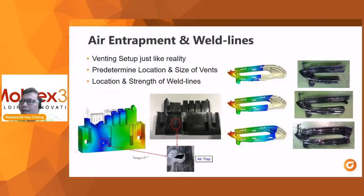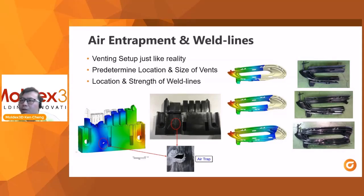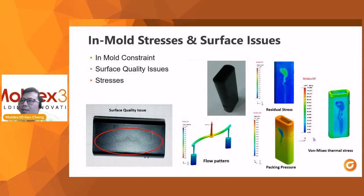This example shows air traps — because you know where the air traps are, you can place your venting location. The picture on the right shows where the weld line locations are, and you are able to go back and adjust your gate location, change the thickness, or add flow leaders to change your flow pattern and achieve flow balance. Inside Moldex3D we are also able to understand residual stress induced by flow or by thermal effects, which can cause surface quality issues like tiger stripe.